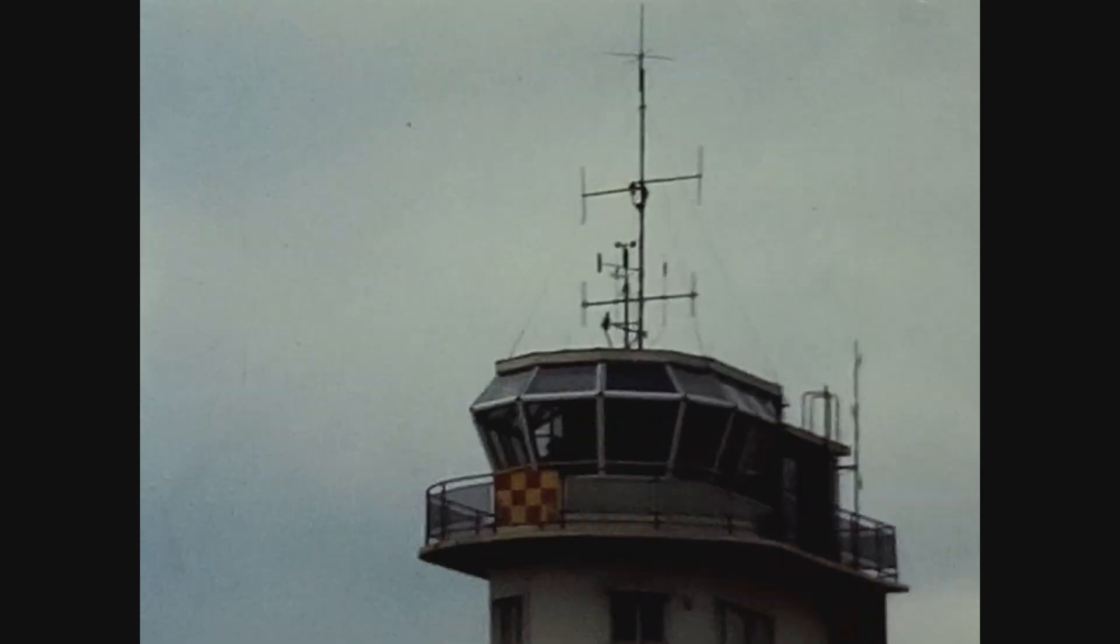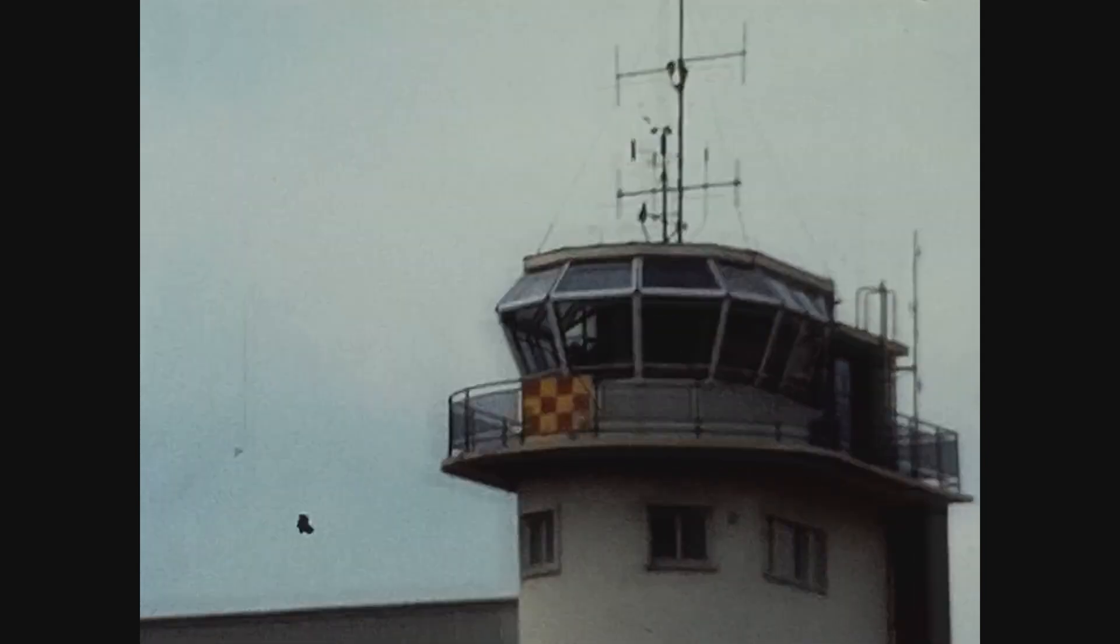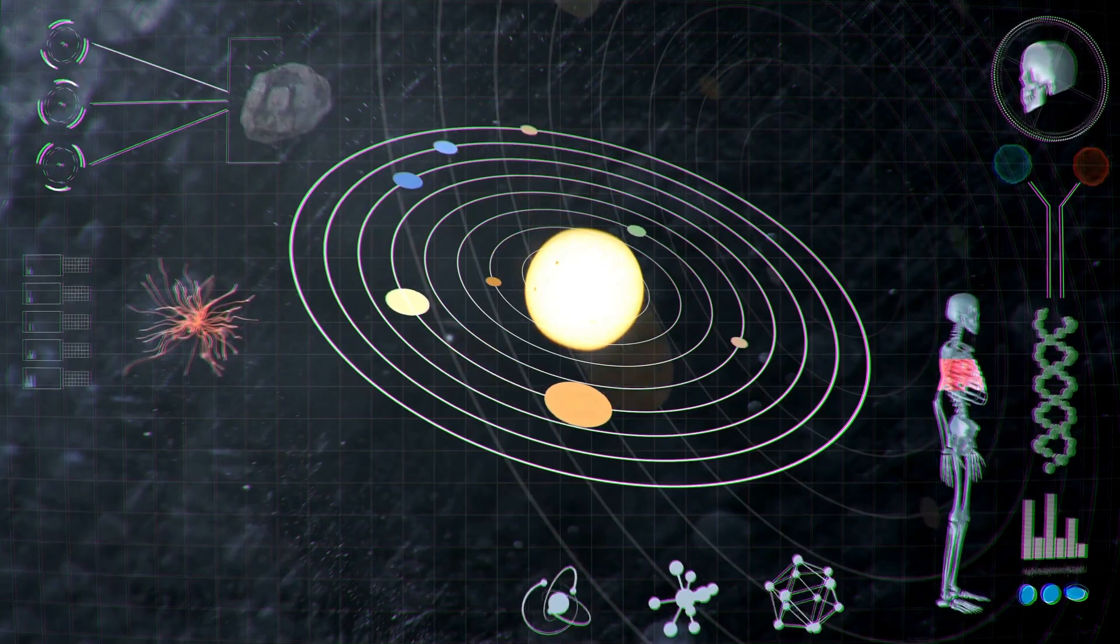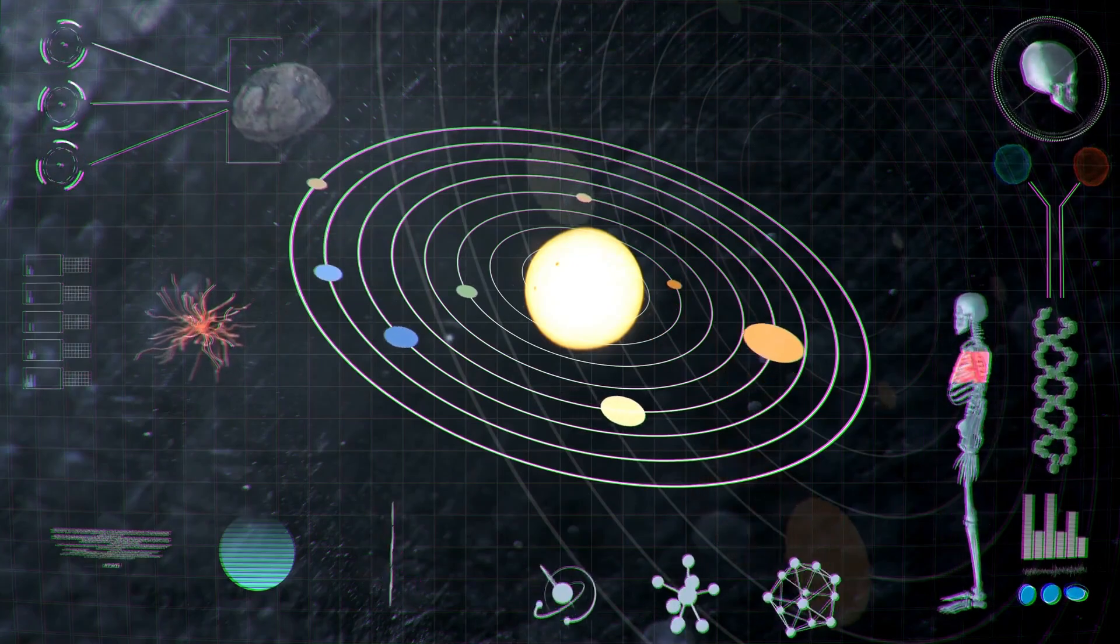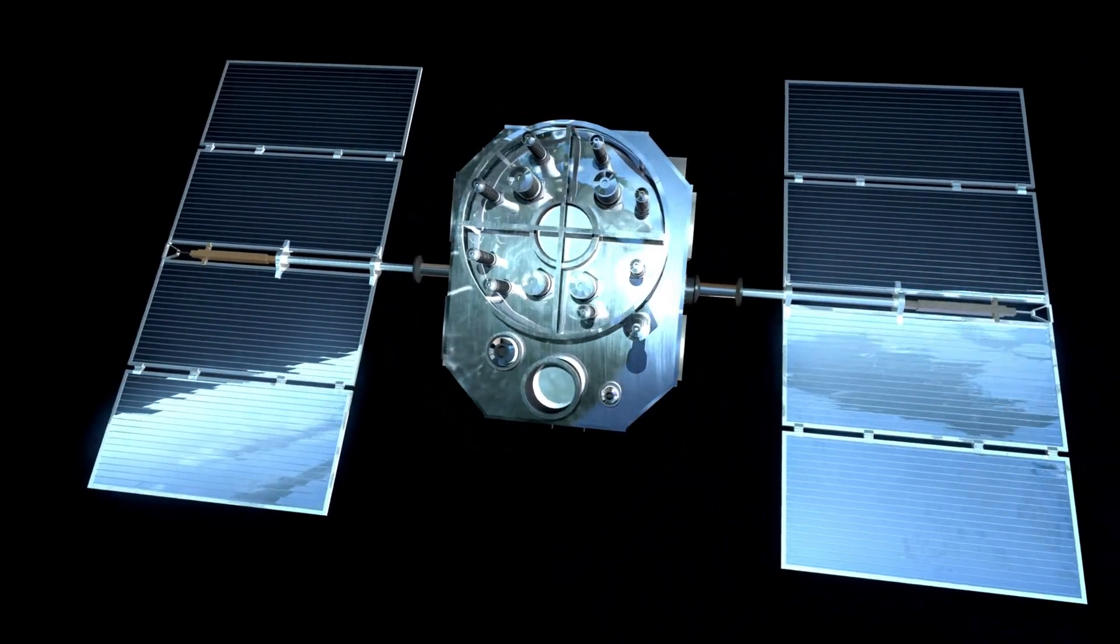Over the years, Voyager 1 has reshaped our understanding of the solar system, from the active volcanoes on Io to the icy crust on Europa. Its discoveries have sparked new questions and inspired future missions like the Europa Clipper and Titan Dragonfly.